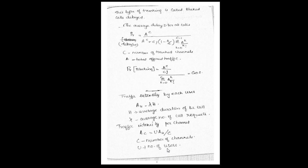We calculate traffic intensity per user. One user contributes a certain traffic intensity. The traffic intensity per channel is determined by how many users share the number of channels. U is the number of users, and the traffic intensity of U users across specific channels is A equals U into Au, where Au is the traffic intensity per user.